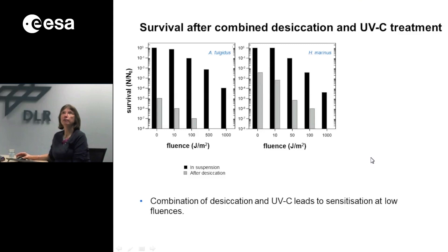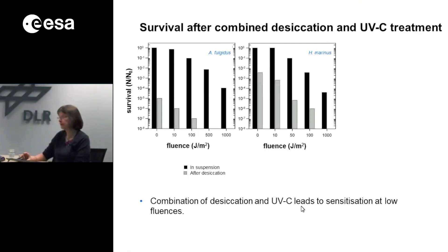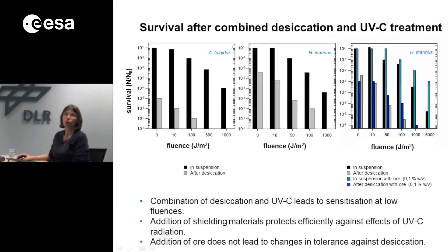When we look at the effect of combined treatment of desiccation and UV radiation, in the example of Archaeoglobus fulgidus and Thermotoga maritima, we can see that the combination of both factors leads to sensitization at low fluences. When we added ore as a shielding material to the aerosol suspensions, we could show it protects efficiently against UV-C radiation as expected, but addition of ore did not lead to changes in tolerance against desiccation.